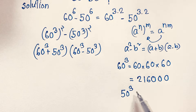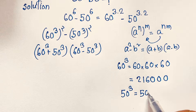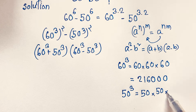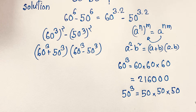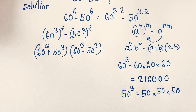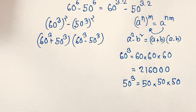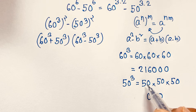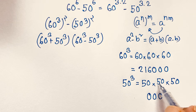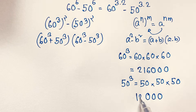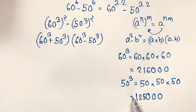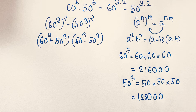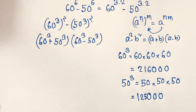Now 50 cubed equals 50 times 50 times 50. There are three zeros, and 5 times 5 is 25, then 25 times 5 is 125. So 50 cubed equals 125,000.